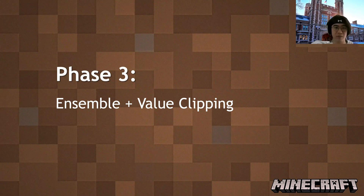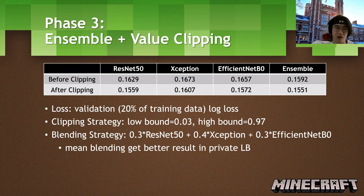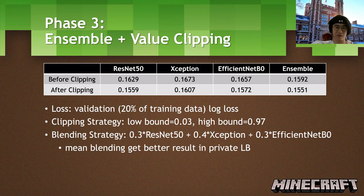In phase three, I use ensembling and value clipping. All values shown are the validation log loss, approximately 20% of the training data. For the clipping strategy, I use a lower bound of 0.3 and upper bound of 0.97. This clipping strategy smooths the punishment on log loss for false positive and false negative predictions with high confidence. For the blending strategy, I use weight 0.3 on the ResNet 50 based model and 0.4 on the EfficientNet based model. The Xception model gave the best single model performance, but taking the simple average of predictions from the two models gave even better results.